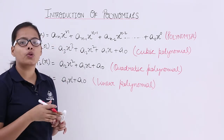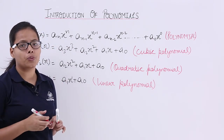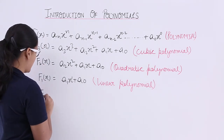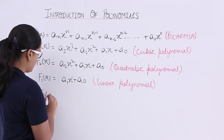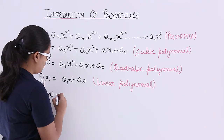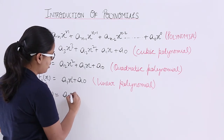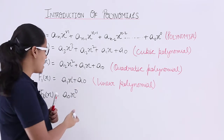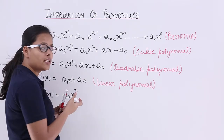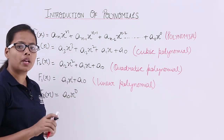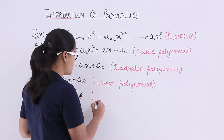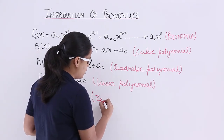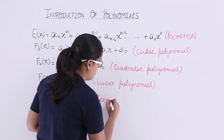The last condition is if n is equal to 0. If n is 0, then this function will be a0 times x raised to the power 0. Since the degree in x is 0, this polynomial is named the zero polynomial.